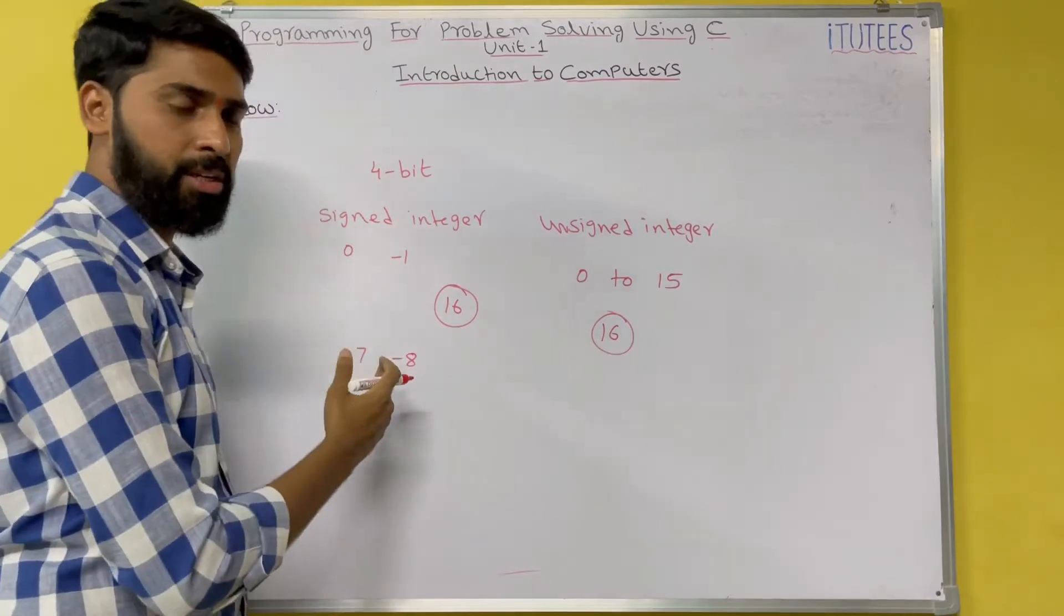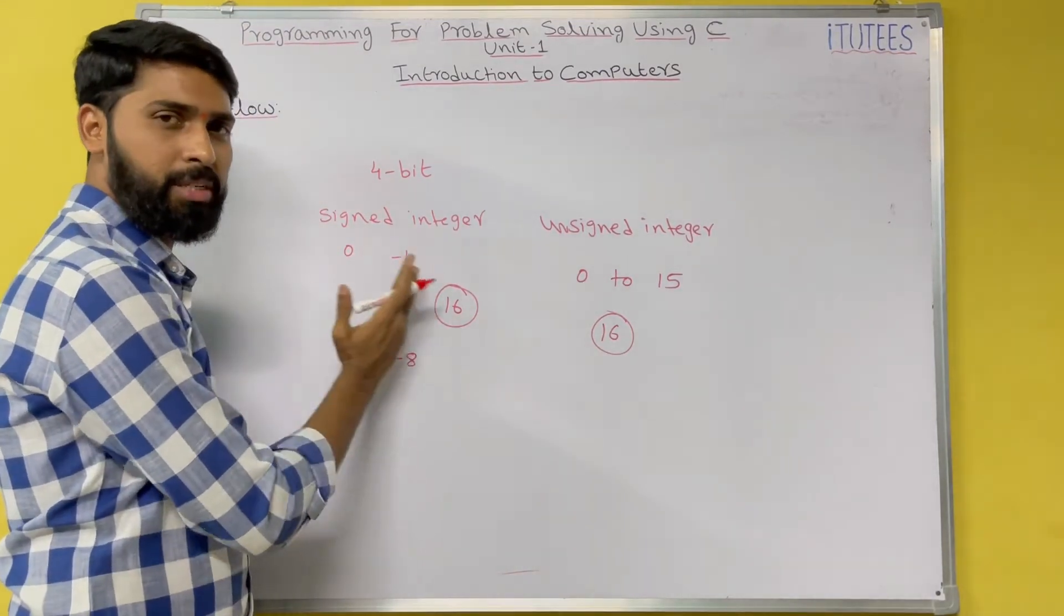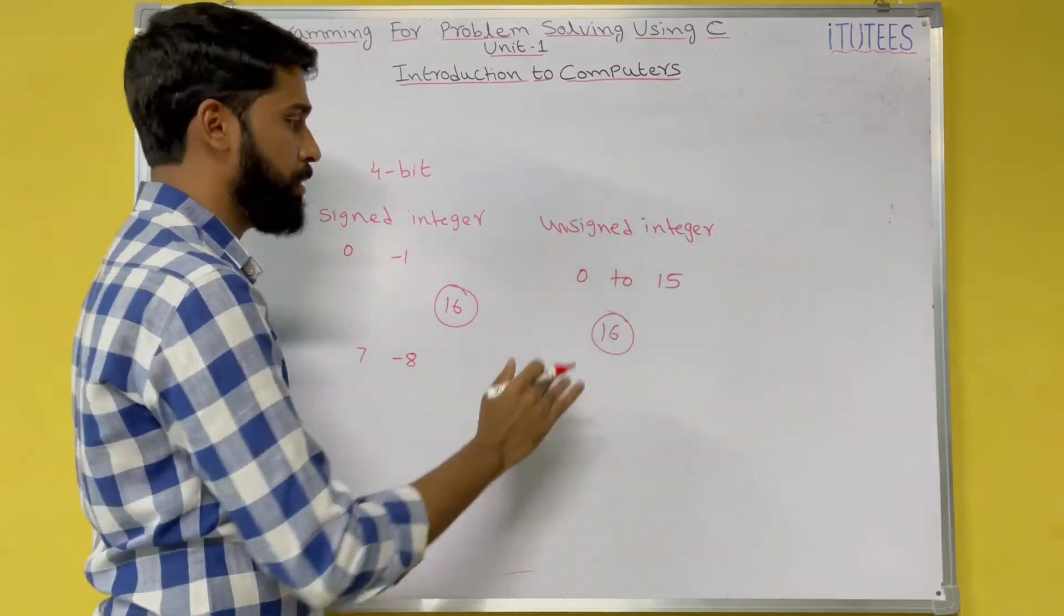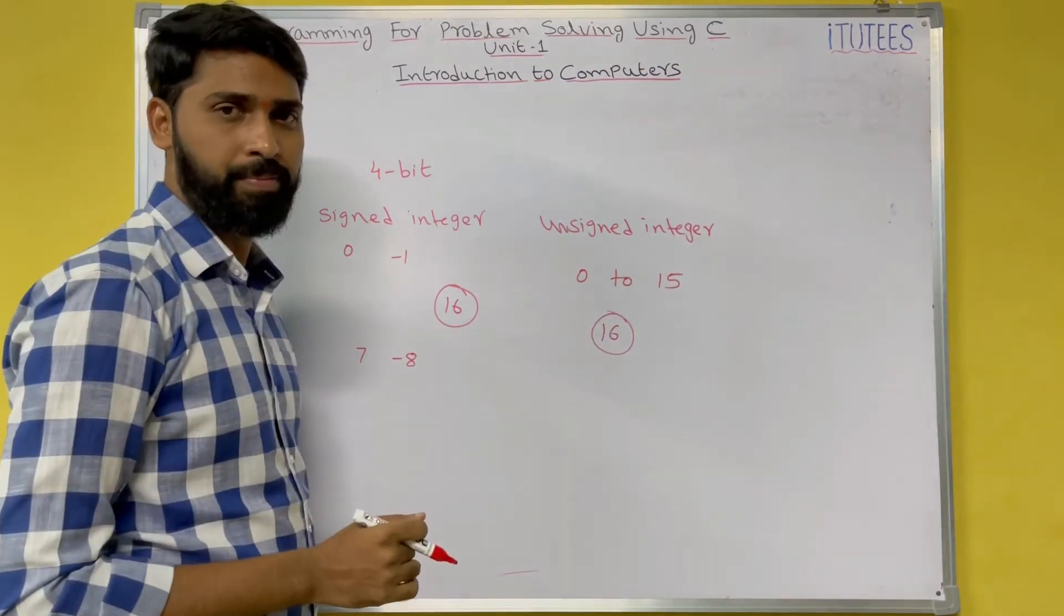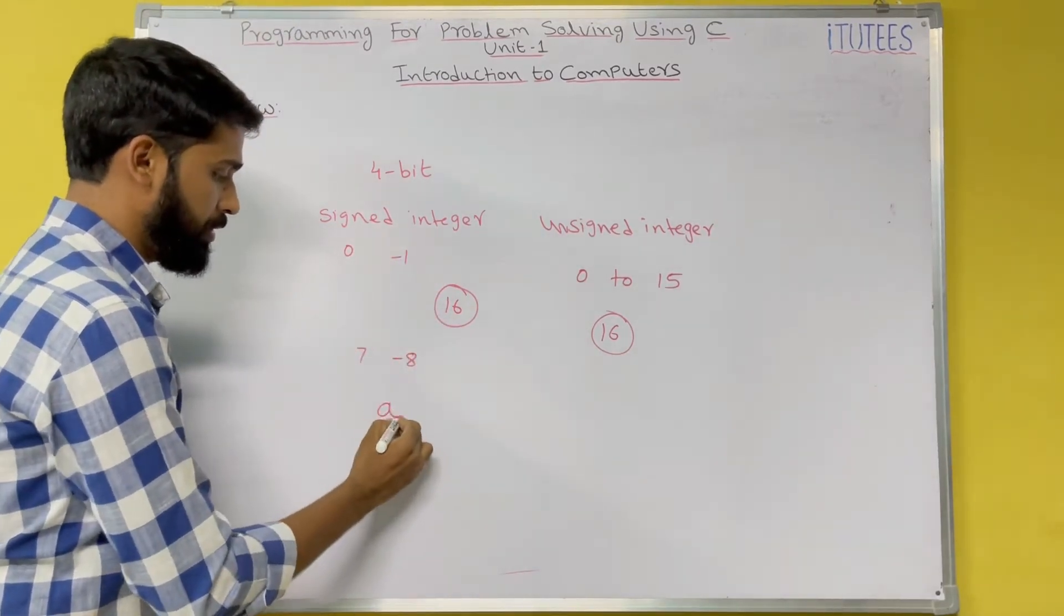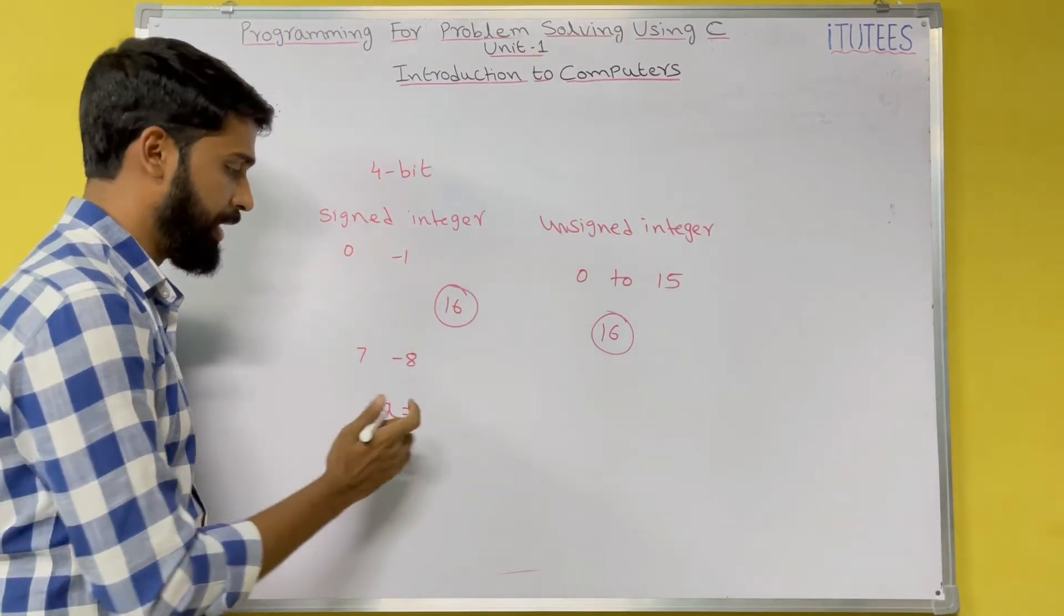Here signed means positive numbers and negative numbers. Unsigned is only positive numbers, 0 to 15. For example, if I take a variable A and I assign 8.